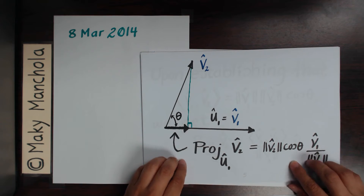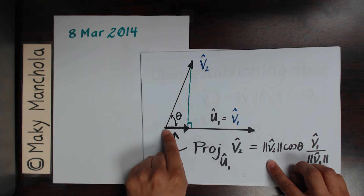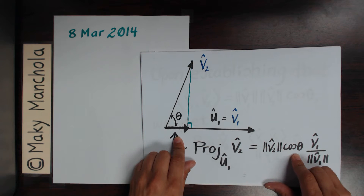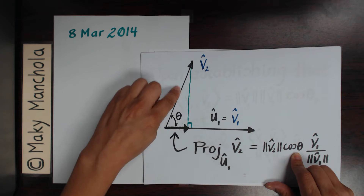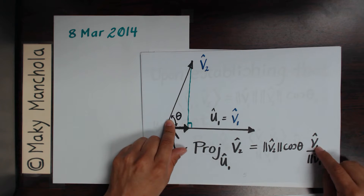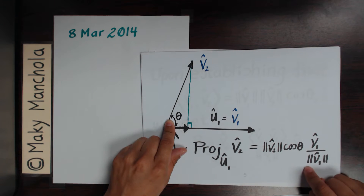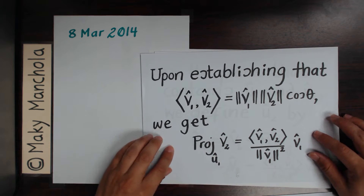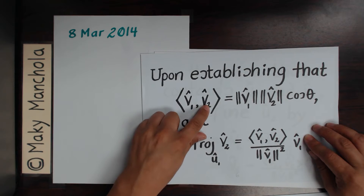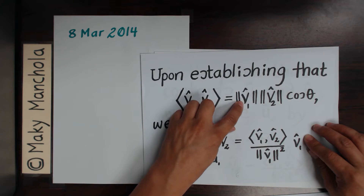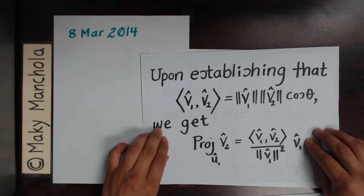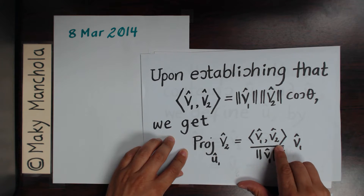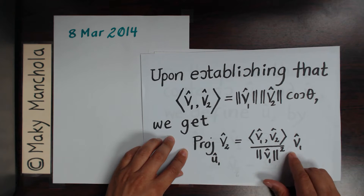From trigonometry we obtain that projection vector. That vector is the norm of v2 times cosine of theta, where theta is the angle between v2 and u1, times v1 over the norm of v1. Upon establishing that the inner product of v1 and v2 equals the norm of v1 multiplied by the norm of v2 times cosine of theta, we obtain that the projection of v2 onto u1 is the inner product of v1 and v2 over the norm of v1 squared, times v1.